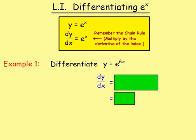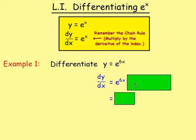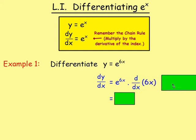Example 1: differentiate y equals e to the power of 6x. E to the power of 6x stays as e to the power of 6x, but you need to multiply by the derivative of the index. If you differentiate 6x with respect to x, you get 6. So you end up with 6e to the power of 6x.